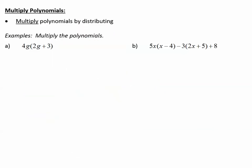Now let's talk about multiplying polynomials. When we see multiply, we want to think of distributing. Multiply polynomials by distributing. For example, 4g is multiplied to the binomial 2g plus 3. Distributing 4g to both terms: 4g times 2g — 4 times 2 makes 8, g times g makes g squared — so 8g squared. Then 4g times positive 3 makes positive 12g. That's it.